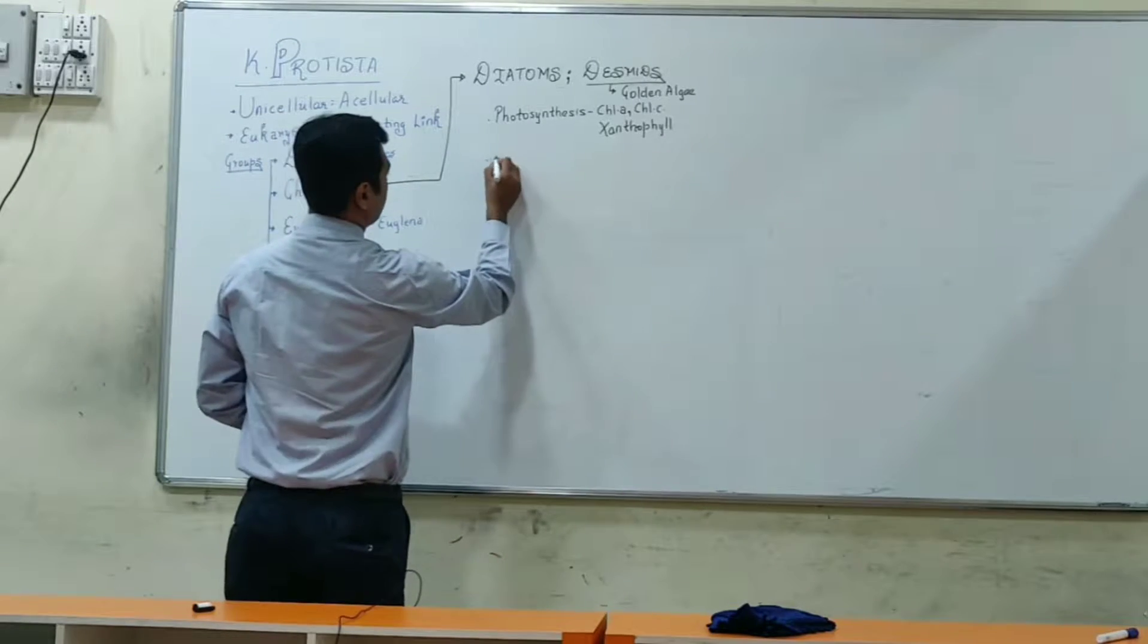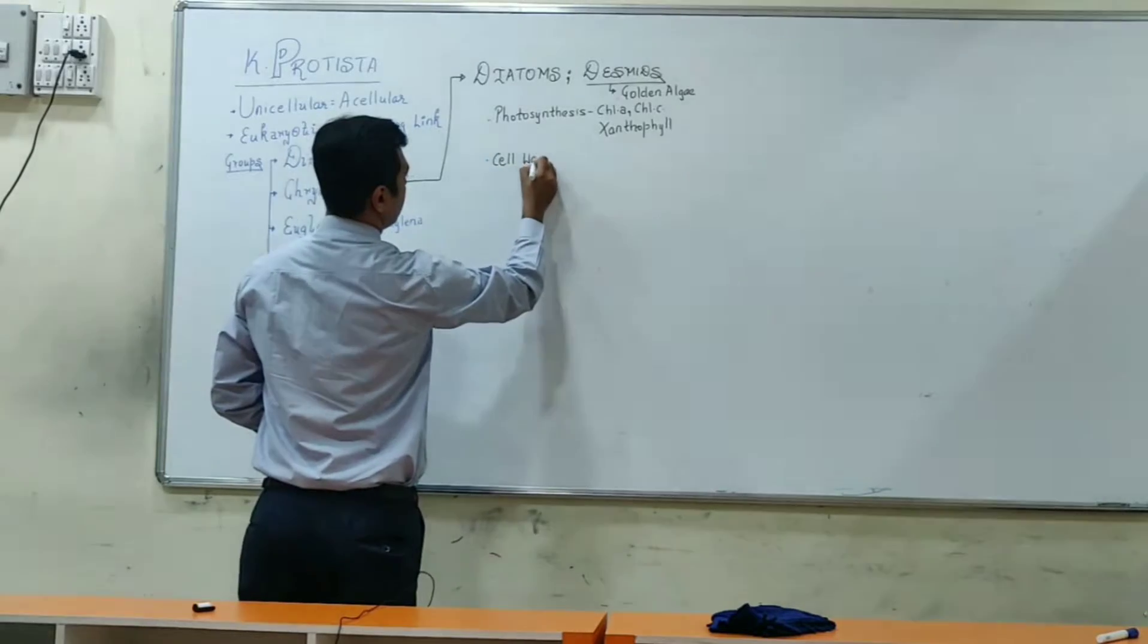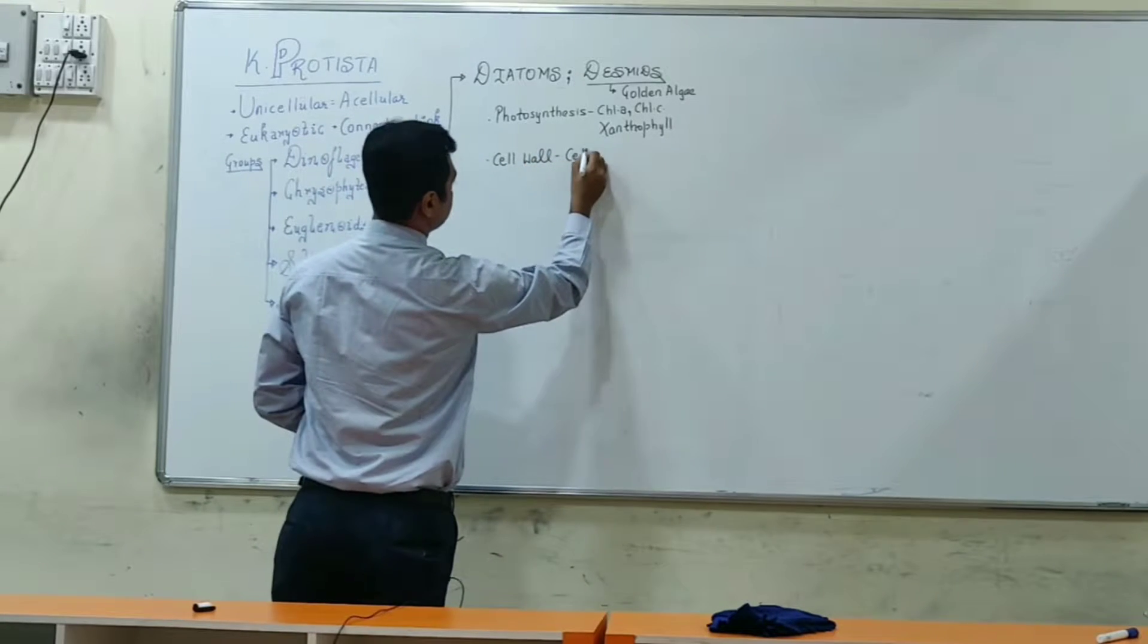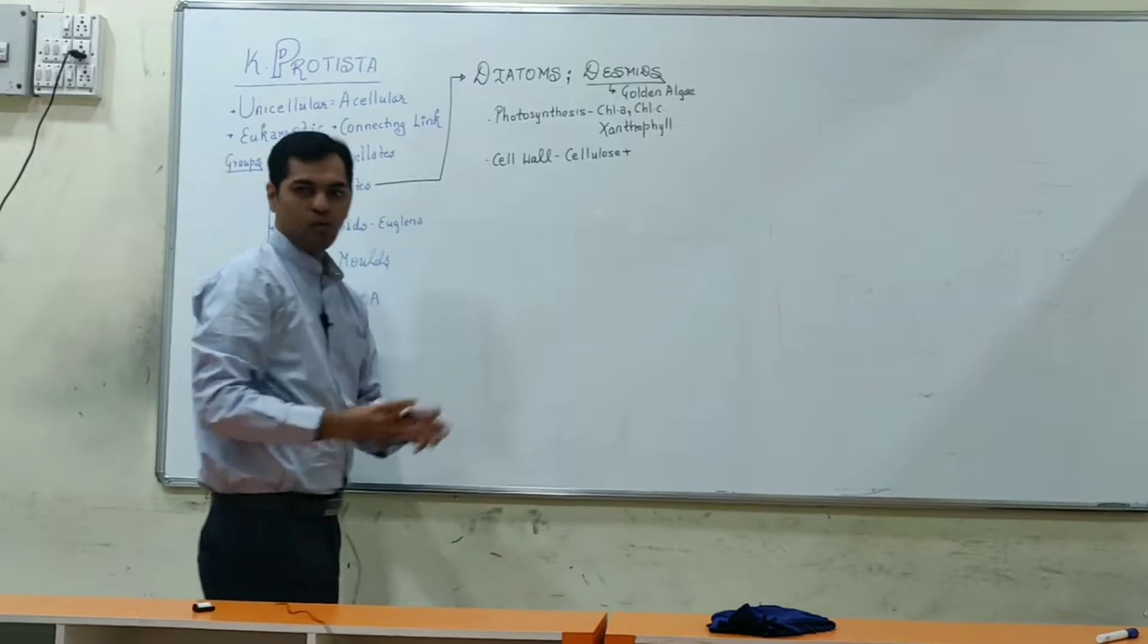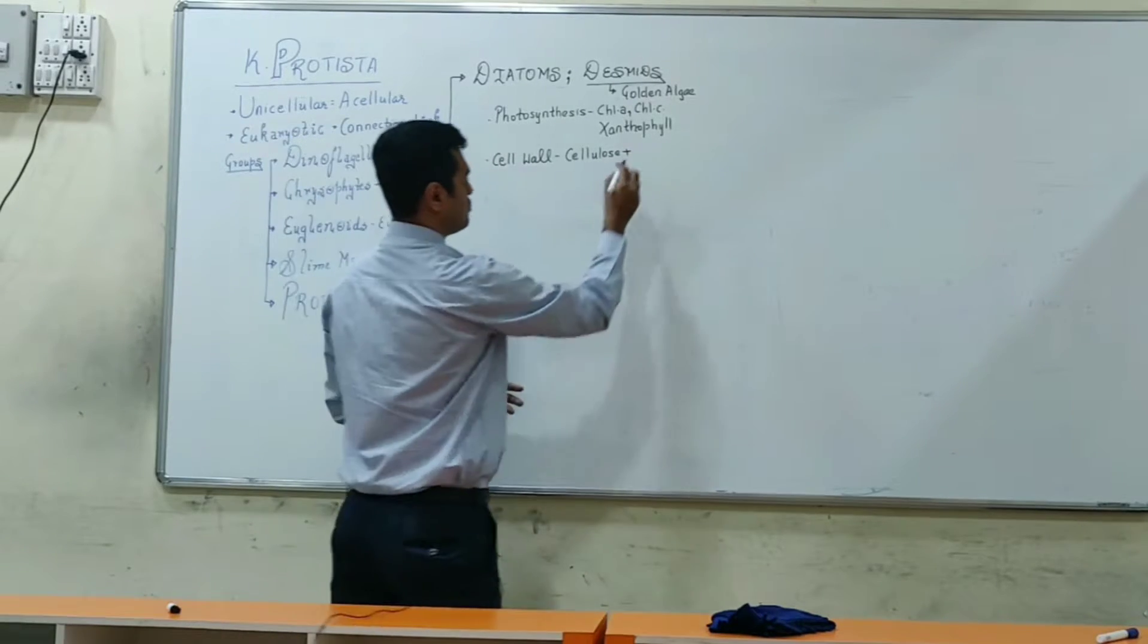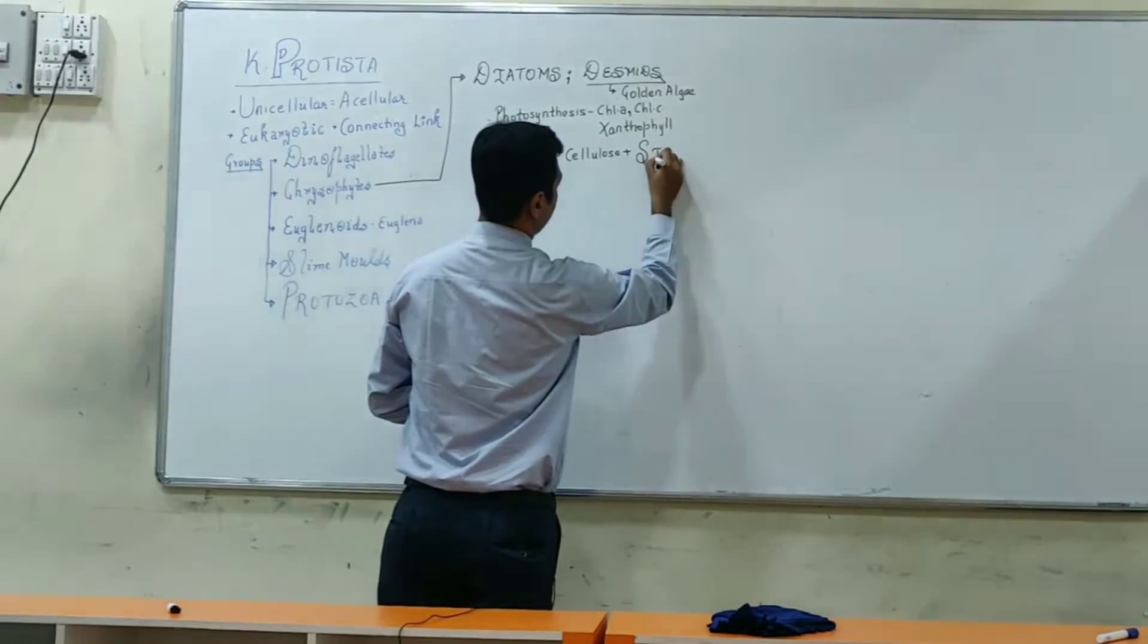They have a cell wall made up of cellulose, plus a very important ingredient present in their cell wall: silica.